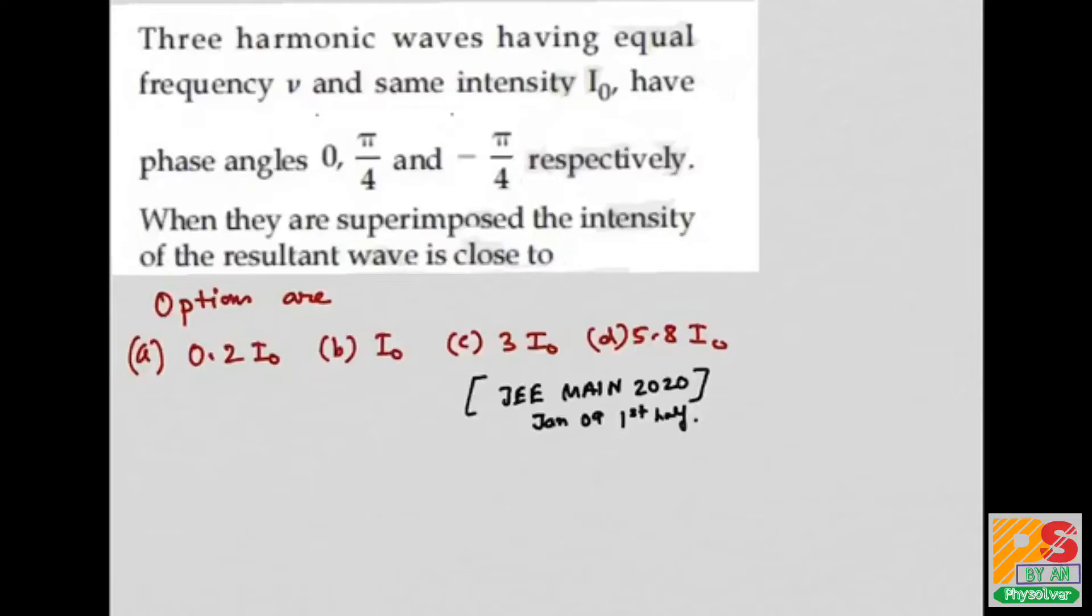The options are given. This question is taken from JEE Main 2020, January 9th, first shift. First I will write the formula for wave intensity. Wave intensity is nothing but the energy that is propagated per unit time per unit area.